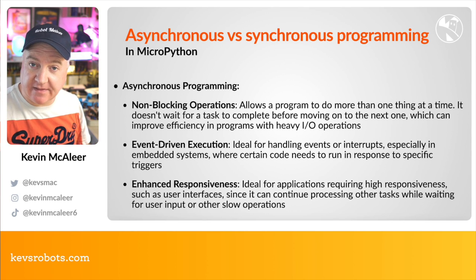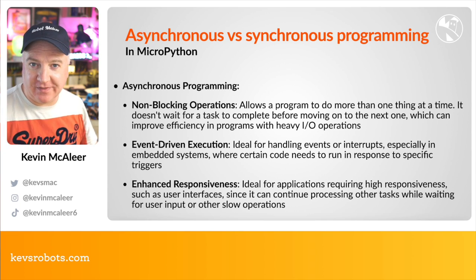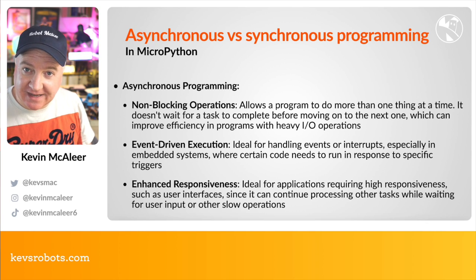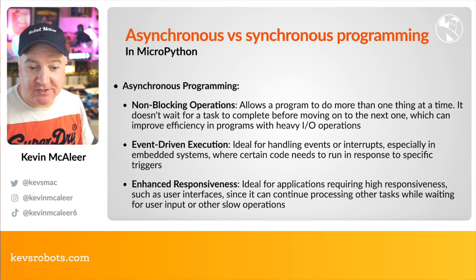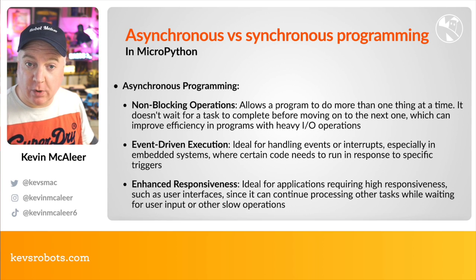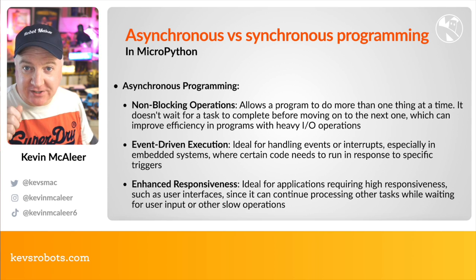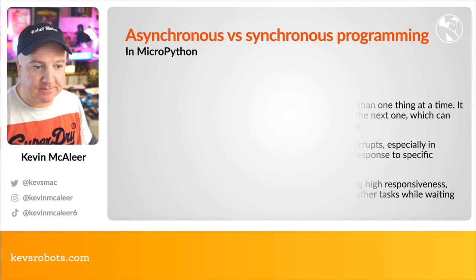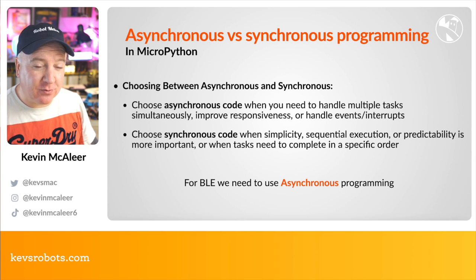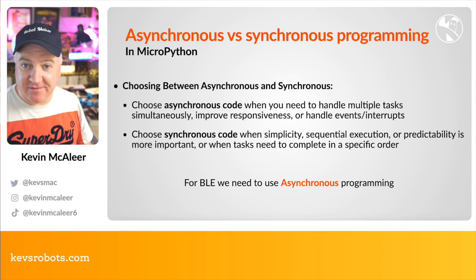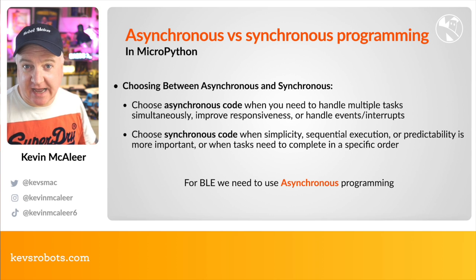In our case, when a button is pressed it will fire off code to send a signal over Bluetooth to the robot, which can then interpret it as moving forward or turning. This means the system can be a lot more responsive. Rather than looping and testing each button, we simply say: if this is pressed, fire off that task. For BLE we need to use asynchronous programming because we don't know when a signal is going to be received to move the robot.